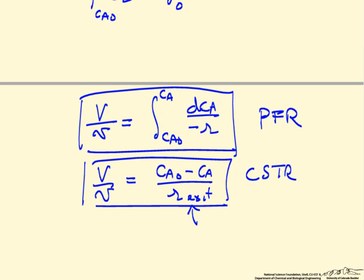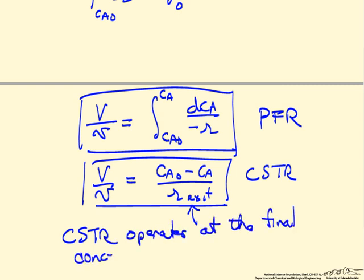And so typically, of course, the rate is much lower at the exit conditions because the concentration is lower, but the mass balances really look very similar. The thing to keep in mind is the CSTR operates at the exit concentration, and this makes a big difference in the rate of reaction.